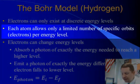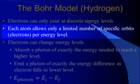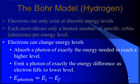He said each atom allows only a limited number of specific orbits, or electrons, per energy level. And electrons can change energy levels. If they absorb a photon of exactly the energy needed to reach a higher energy level, that electron can jump to a higher energy level. Or if it falls to a lower energy level, it gives off a photon exactly equal to the difference in energy levels.